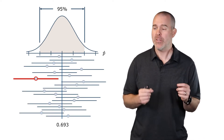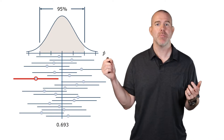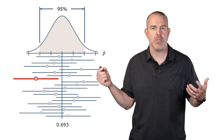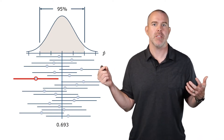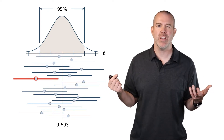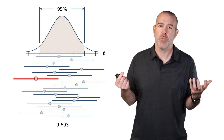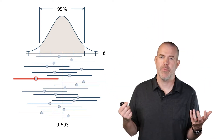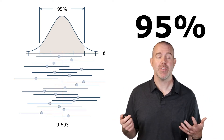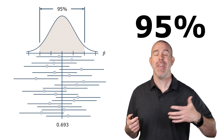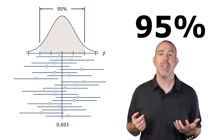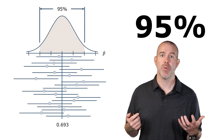One interval might miss because we got an extreme observation — a weird sample that gives a really small sample proportion. When we do the plus or minus two standard deviations, we actually miss the true proportion. The key is that about 95% of these confidence intervals, if we keep doing this, will contain the true proportion.